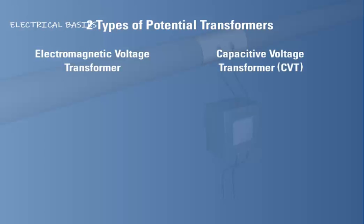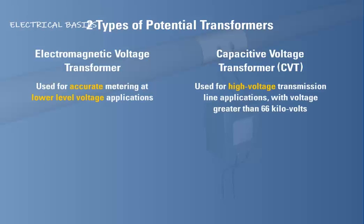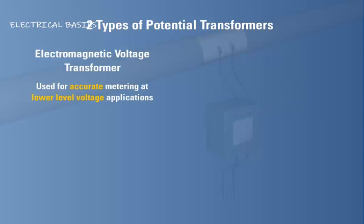Electromagnetic voltage transformers are usually used when accurate metering needs to be performed for lower voltage applications. Capacitive voltage transformers are commonly used in high voltage transmission line applications where the voltage is higher than 66 kilovolts.